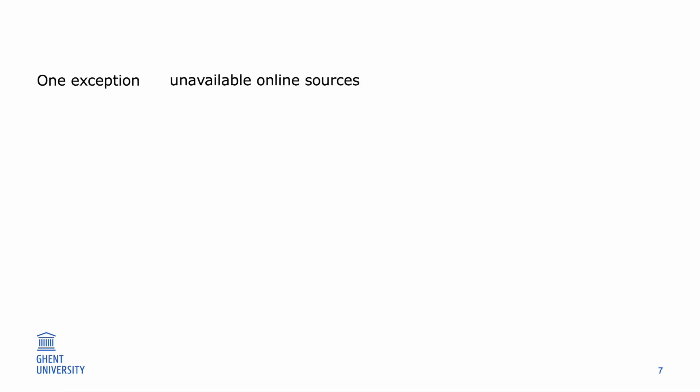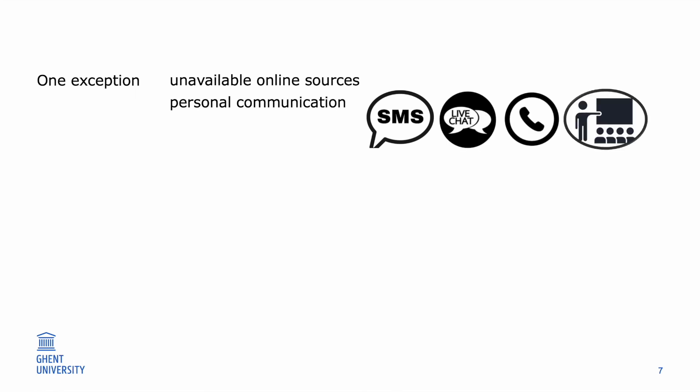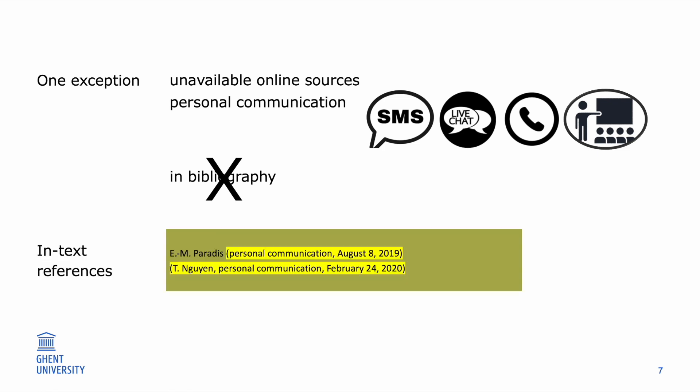There is one exception to this rule. Sometimes works cited cannot be retrieved because they were online sources that are no longer available on the internet, for example. Or they are part of personal communication like text messages, online chats, telephone conversations, unrecorded classroom lectures, and so on. Since these source types cannot be consulted by an outsider, they are not included in the bibliography. But you still refer to them in the text by providing the initials and surname of the communicator, and a date that is as exact as possible.